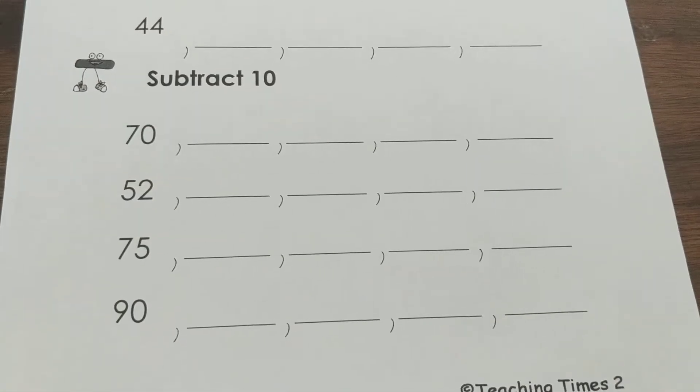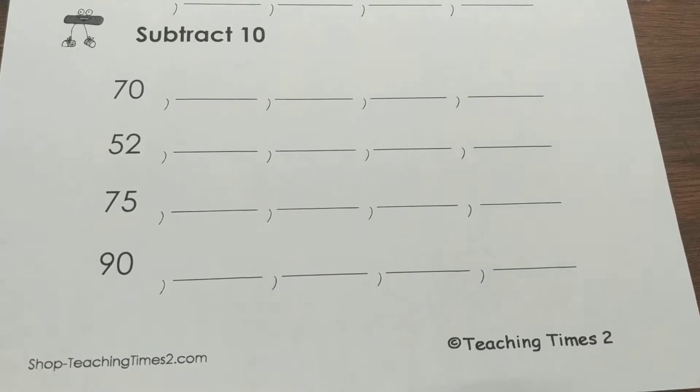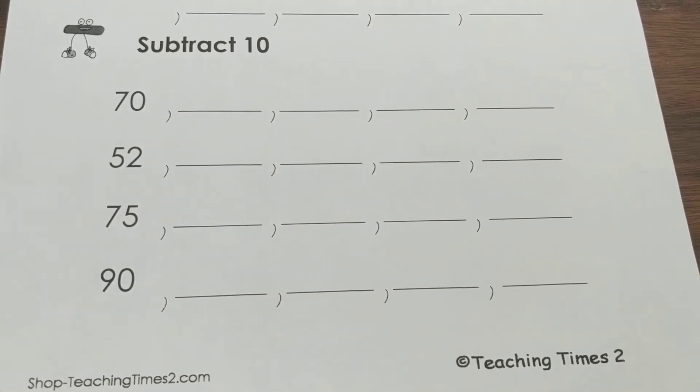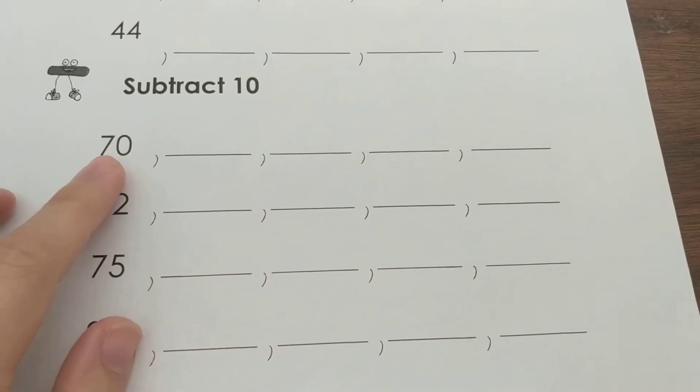On the bottom part it says you're going to subtract 10, so we're taking away 10 this time. You're going up on the 100s chart to make it a smaller number. For this one I'm counting backwards by 10.